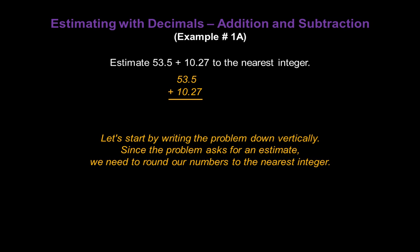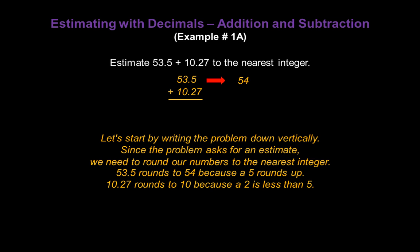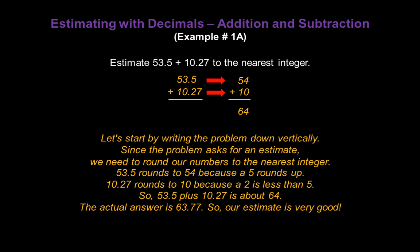Since the problem asks for an estimate, we need to round our numbers to the nearest integer. 53.5 rounds to 54 because a 5 will round our integer up. So we'll use 54 for the first number. 10.27 rounds to 10 because a 2 is less than 5, so our integer portion will just remain as 10. So we're going to add 54 and 10 together. So 53.5 plus 10.27 is about 64. Very easy to add 54 and 10 in our heads. The actual answer is 63.77. So our estimate is very good indeed.